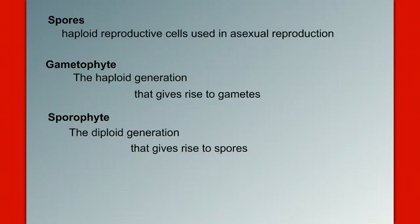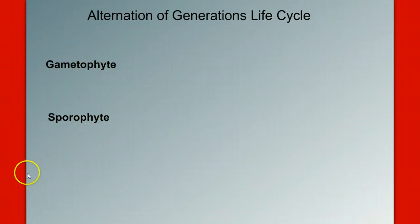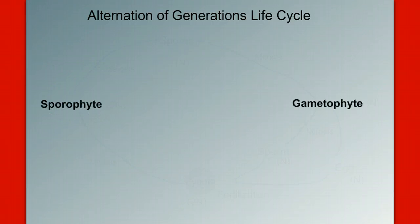Now we can get started. We are talking about alternation of generations, and these are our two generations: a haploid gametophyte generation and a diploid sporophyte generation. This is where the video becomes very interactive — I want you to do this along with me. So get out a blank piece of paper and a pen or pencil. Pause the video right now and I'll wait, because we need to do this together.